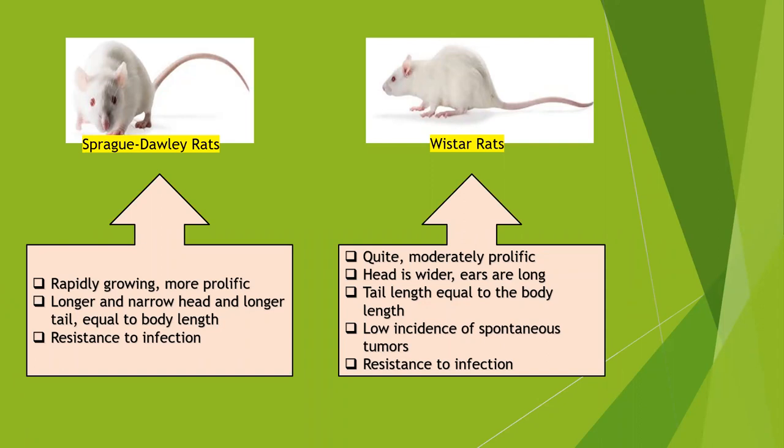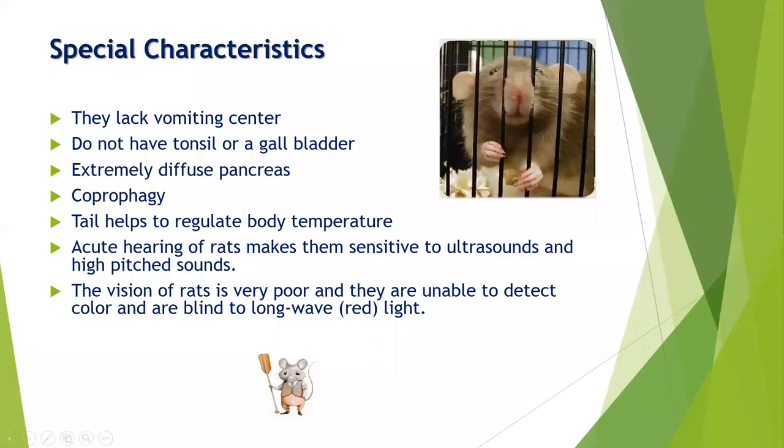Wistar rats are moderately prolific. Their head is wider, whereas in SD rats it is longer and narrow. Ears are longer in Wistar rats. The tail length is equal to the body length in Wistar rats, whereas in SD rats the tail is longer than or equal to the body length. Wistar rats also show a low incidence of spontaneous tumors and are resistant to infection.